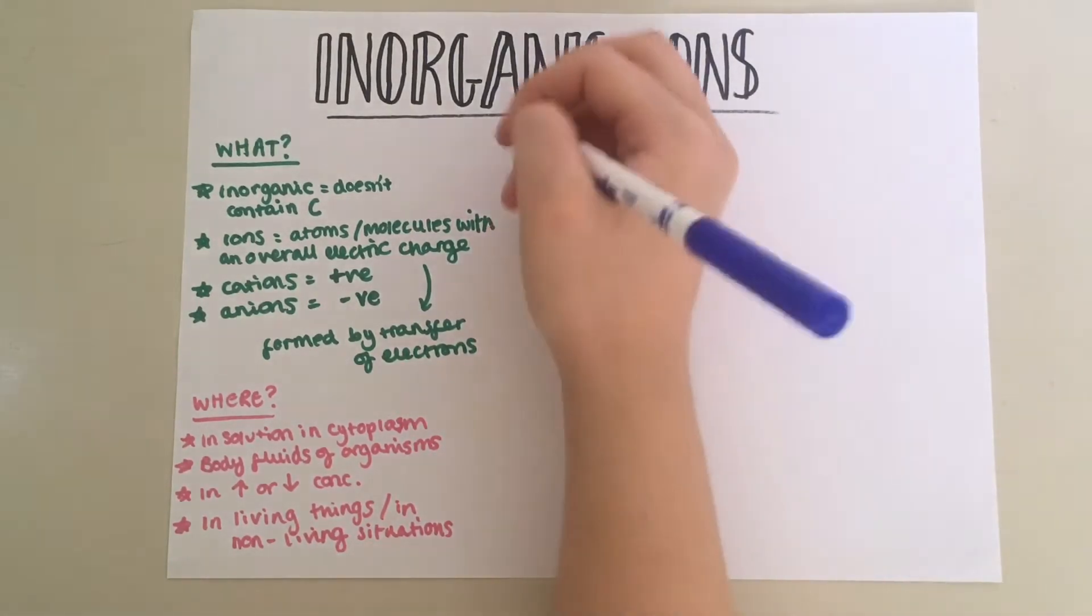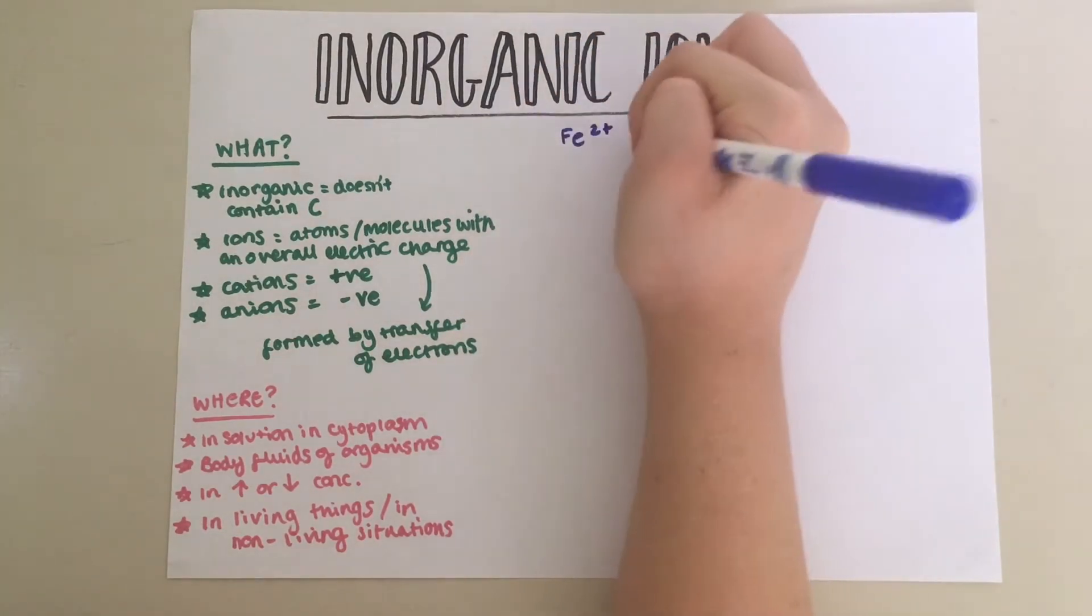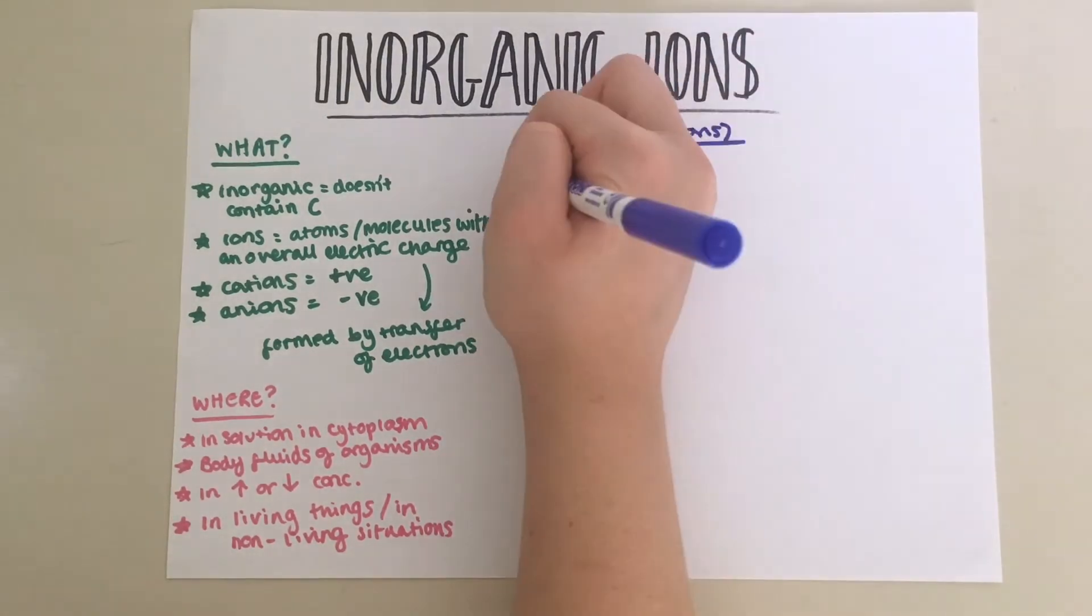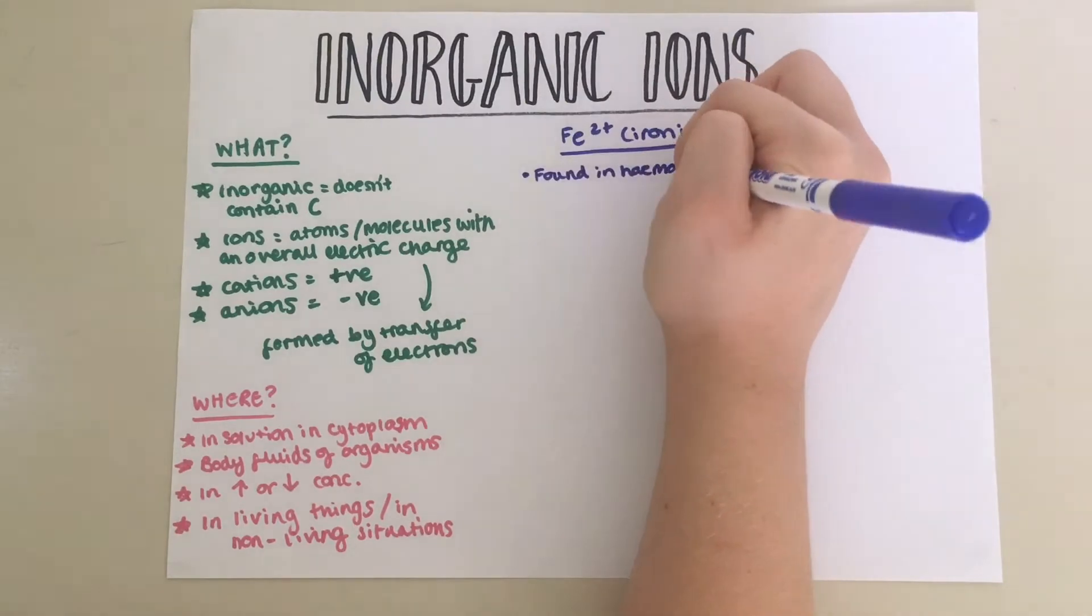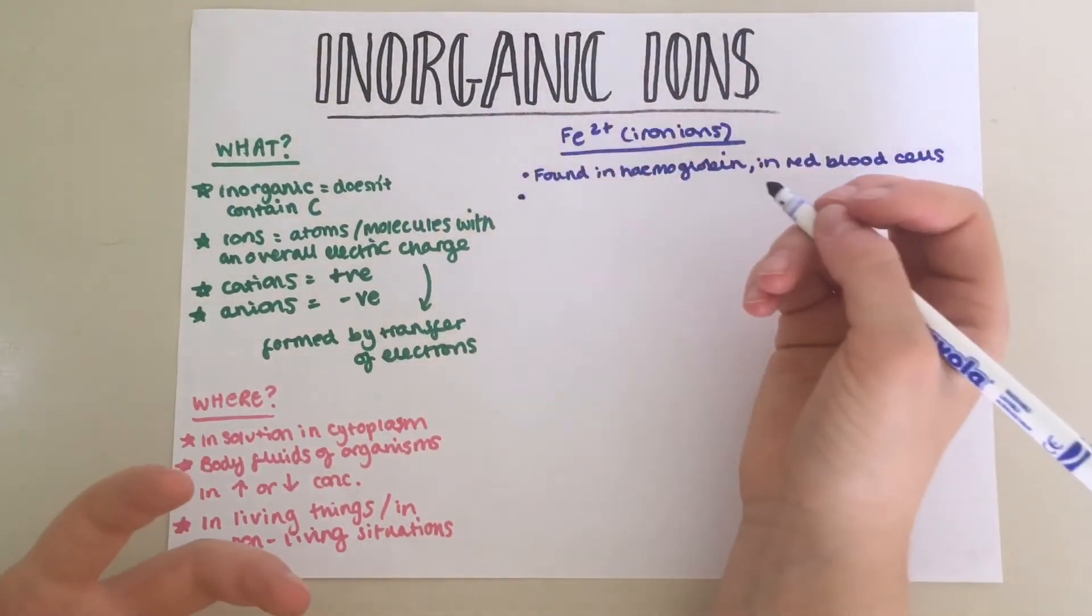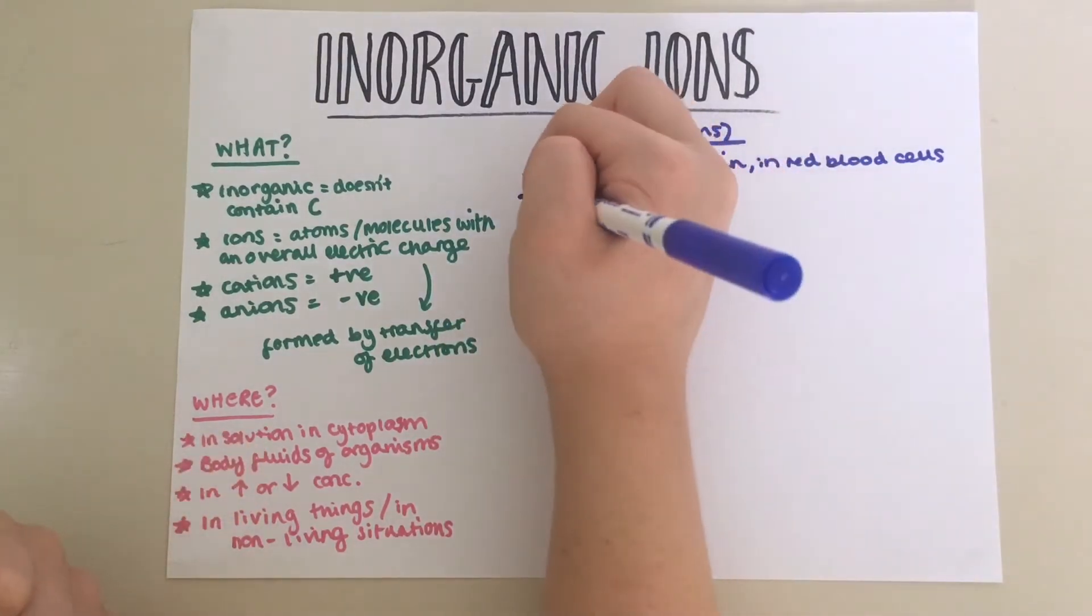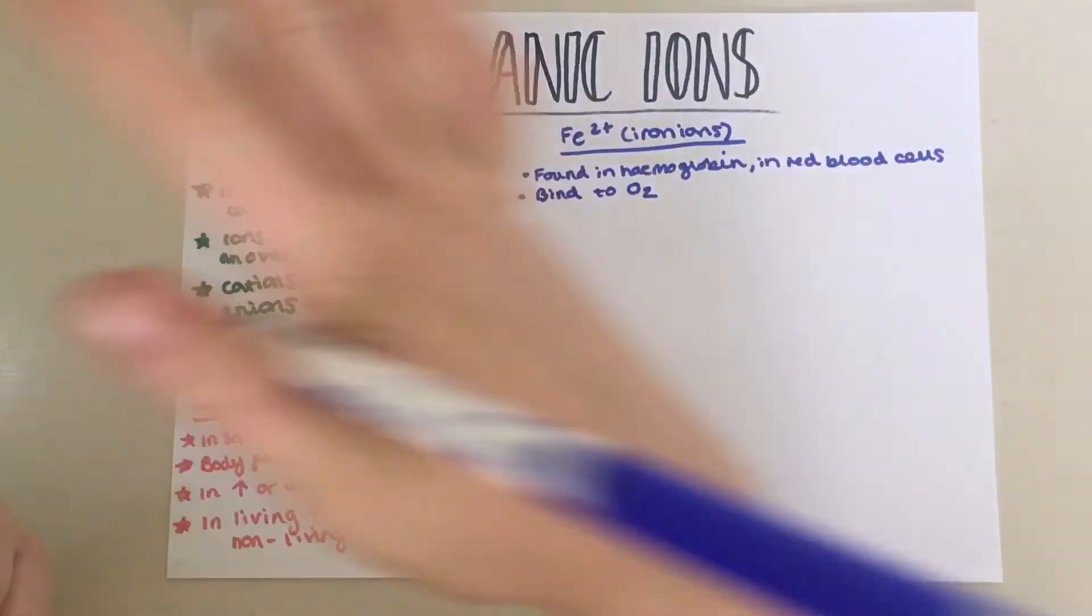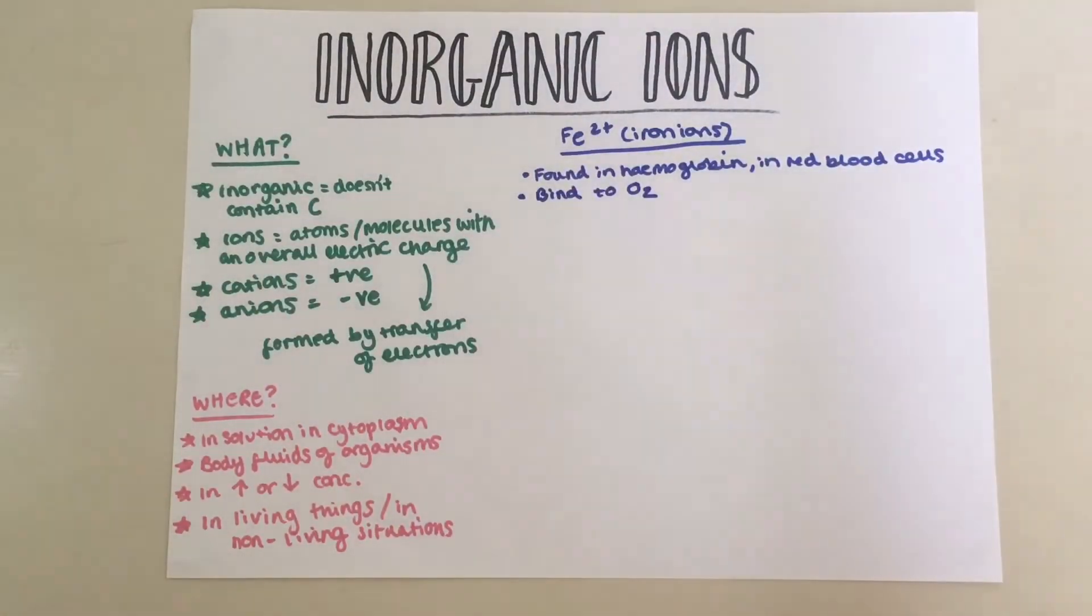Firstly, we've got Fe2+, also known as iron ions. Iron ions are found in the hemoglobin, which is in the red blood cells. The job of the iron ions is to bind to oxygen so that it can be transported around the body to the different cells.